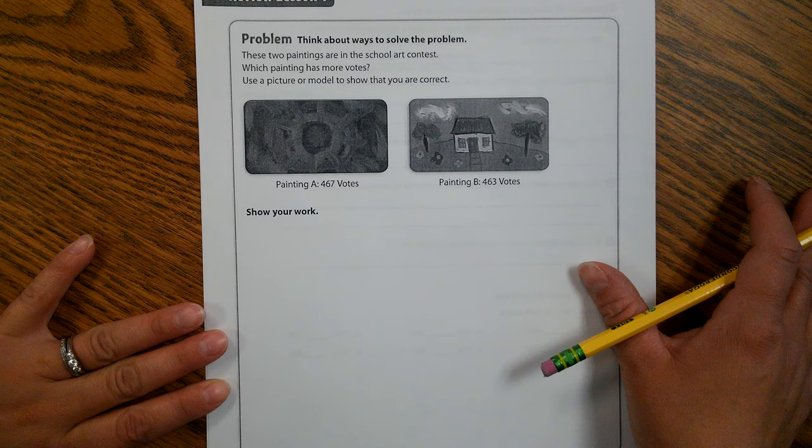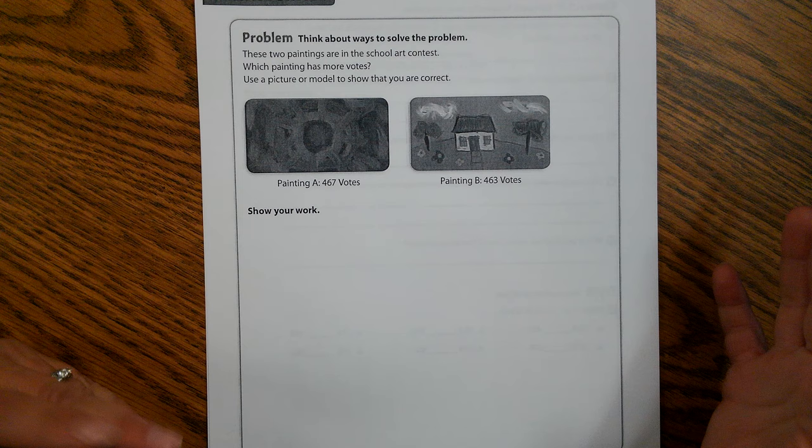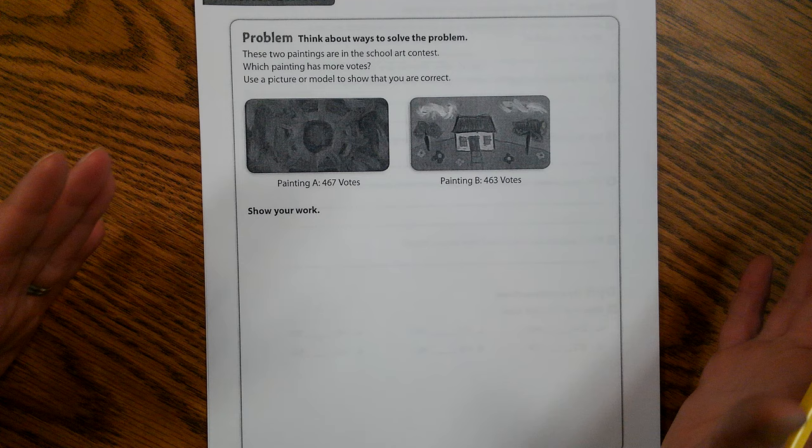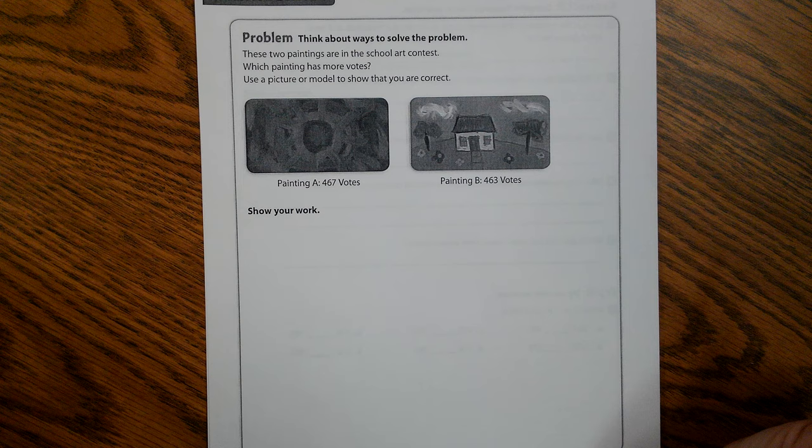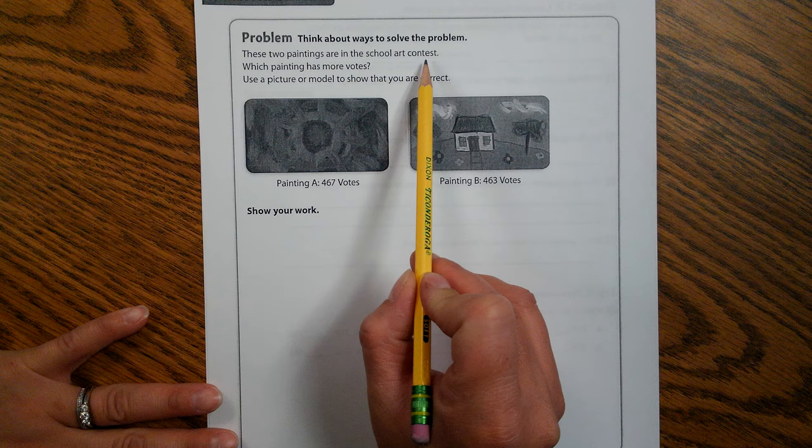This is our first story problem for the year. When we have story problems like this, our very first thing that we have to do is read it. We're going to read it all the way through, then we're going to underline something, and I'm going to ask you what you think we should underline — but I'm going to read through it first.